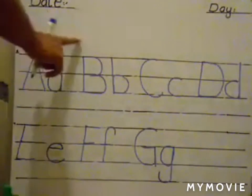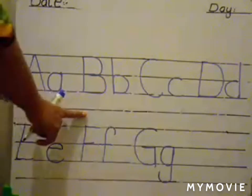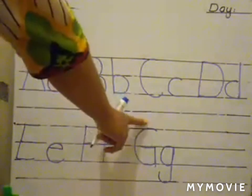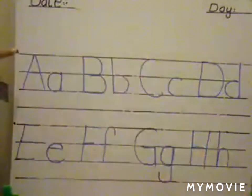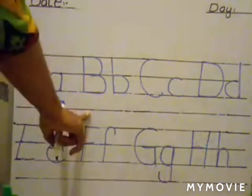A, B, C, D, E, F, G. What comes after G? H. Good. Uppercase H. Lowercase H. Now, again repeat: A, B, C, D, E, F, G, H.